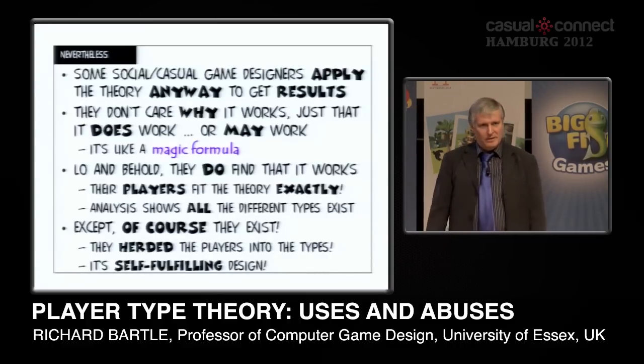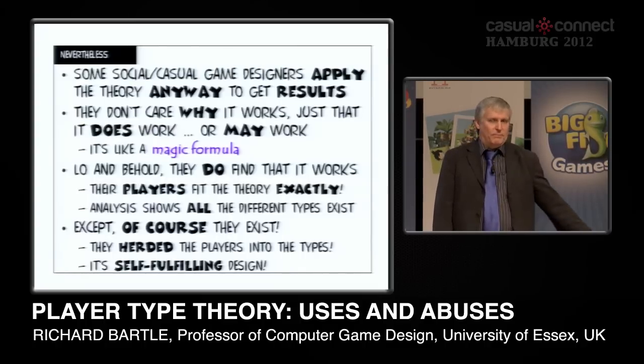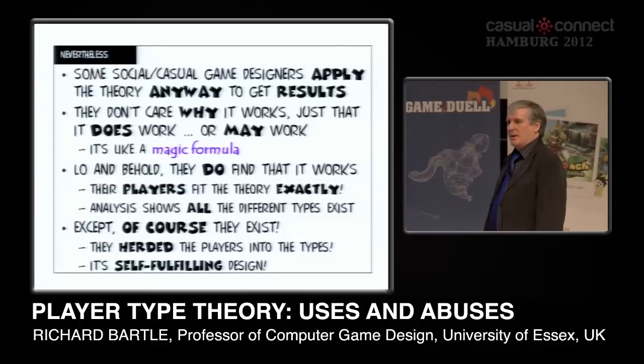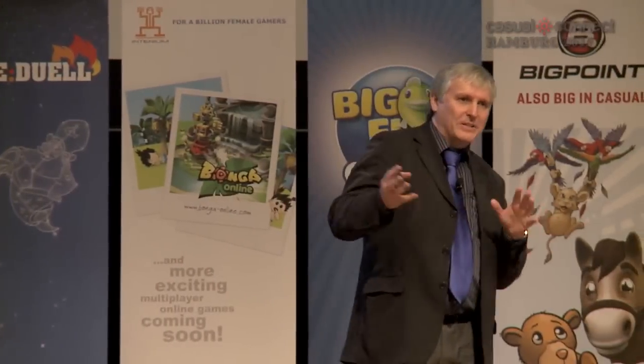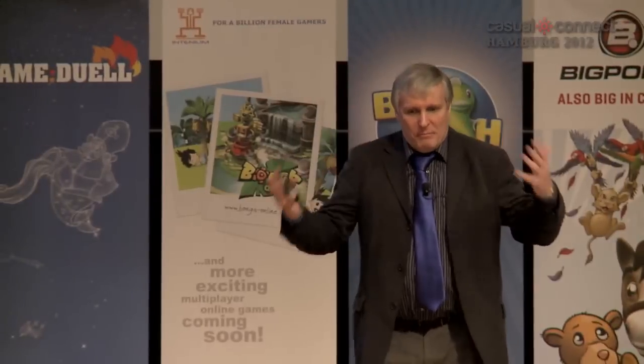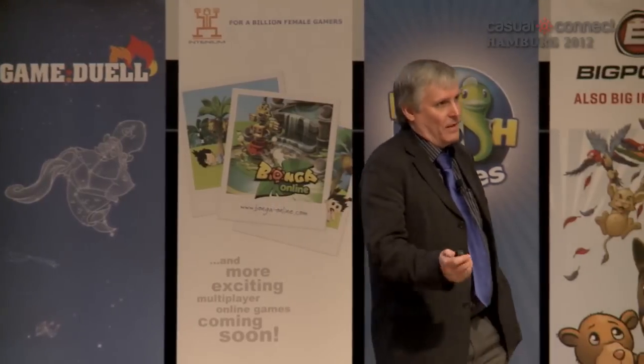Maybe there are another six types you didn't know about, and you lost players because the theory has only limited application. You can't say we'll apply this theory, test it, and it works — that's like having a room with a door only this high, and when everyone who gets in is short, saying 'hey, we've got a room of short people.' You can't create games based on player type theory and measure it by having forced people to play in those types. Still, it gets me consultancy gigs, so I can't complain too much.